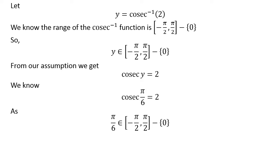As pi upon 6 lies in the close interval of minus half of pi and half of pi except of 0, so pi upon 6 is the principal value of inverse of cosecant of 2.